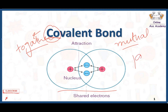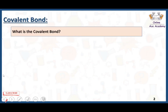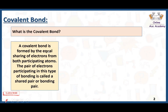Covalent bond was introduced around 1919. Moreover, when there is overlapping of orbitals between two atoms, a bond is formed and that bond is called a covalent bond. A covalent bond is formed by the equal sharing of electrons from both participating atoms. The pair of electrons participating in this type of bonding is called a shared pair or a bonding pair.